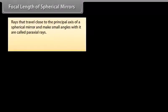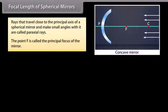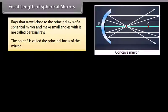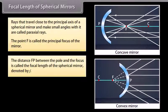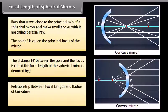Focal length of spherical mirrors: Rays that travel close to the principal axis of a spherical mirror and make small angles with it are called paraxial rays. The point F is called the principal focus of the mirror. The distance FP between the pole and the focus is called the focal length of the spherical mirror, denoted by F. The relationship between focal length and radius of curvature is: F = R/2.